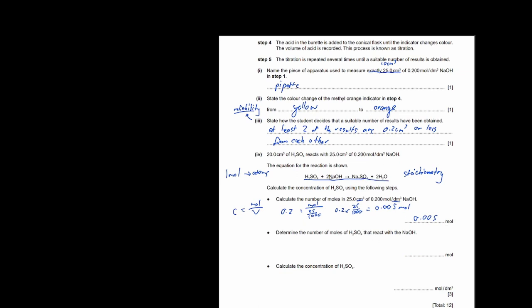Determine the number of moles of H2SO4 that react with NaOH. Use the balanced equation: 1 mole of H2SO4 reacts with 2 moles of NaOH. If you have 0.005 moles of NaOH, the moles of H2SO4 = 0.005 ÷ 2 = 0.0025 moles.